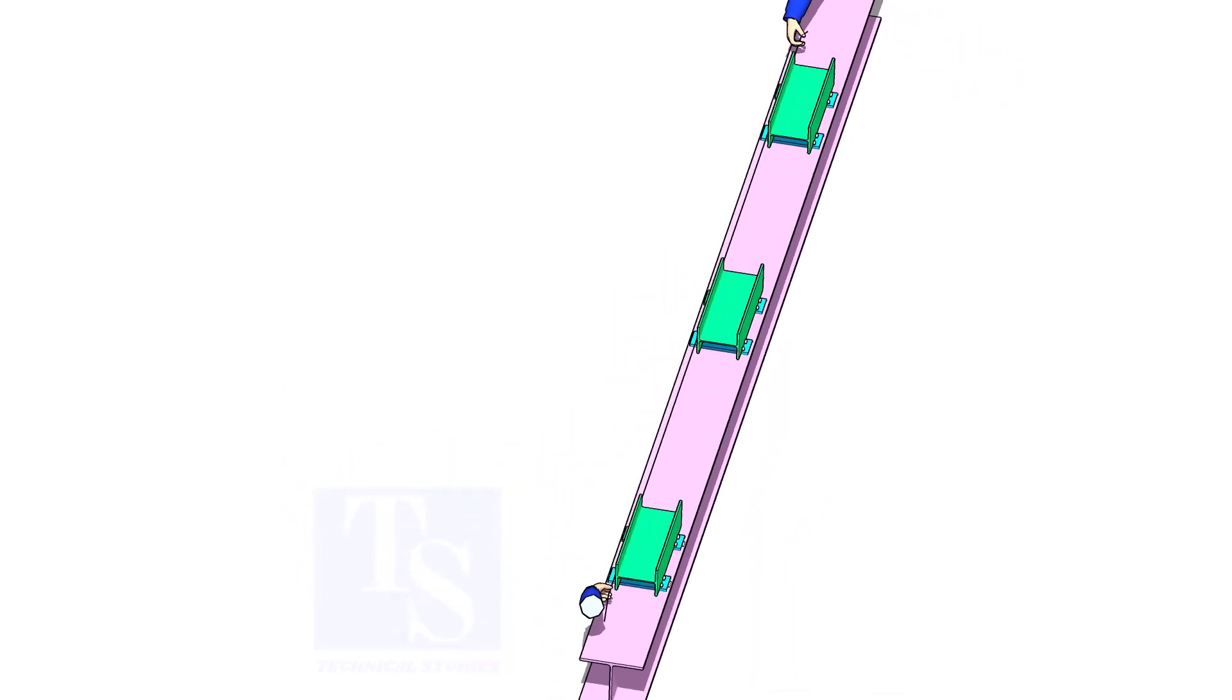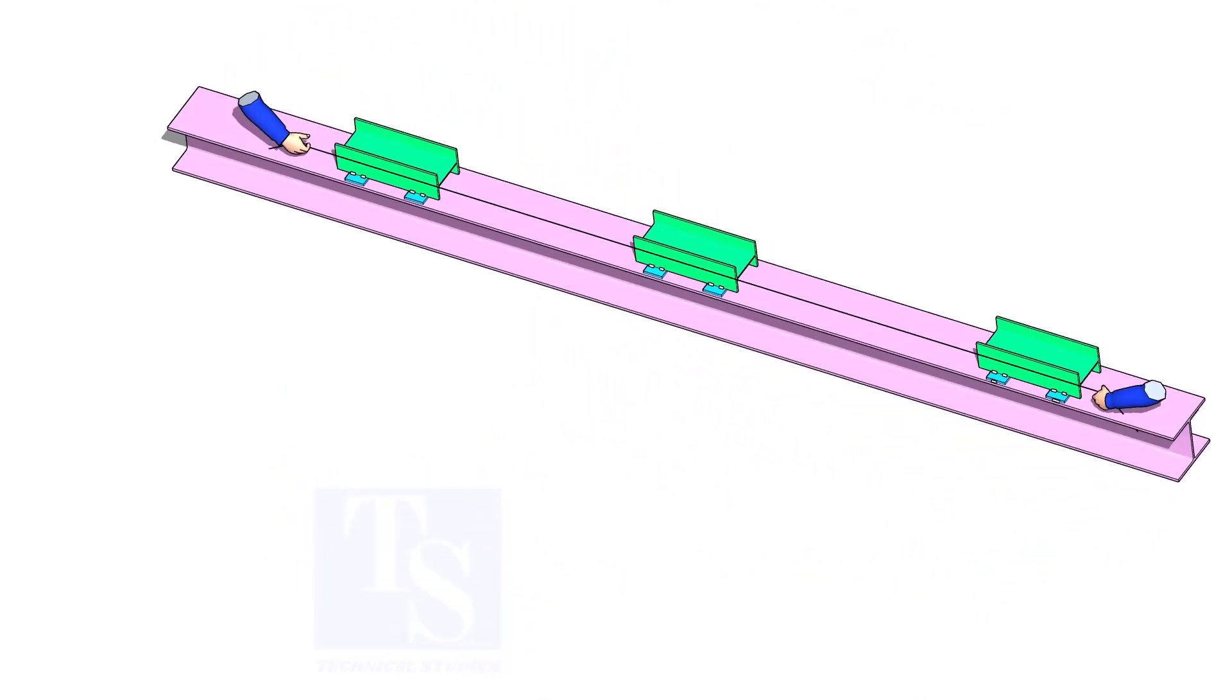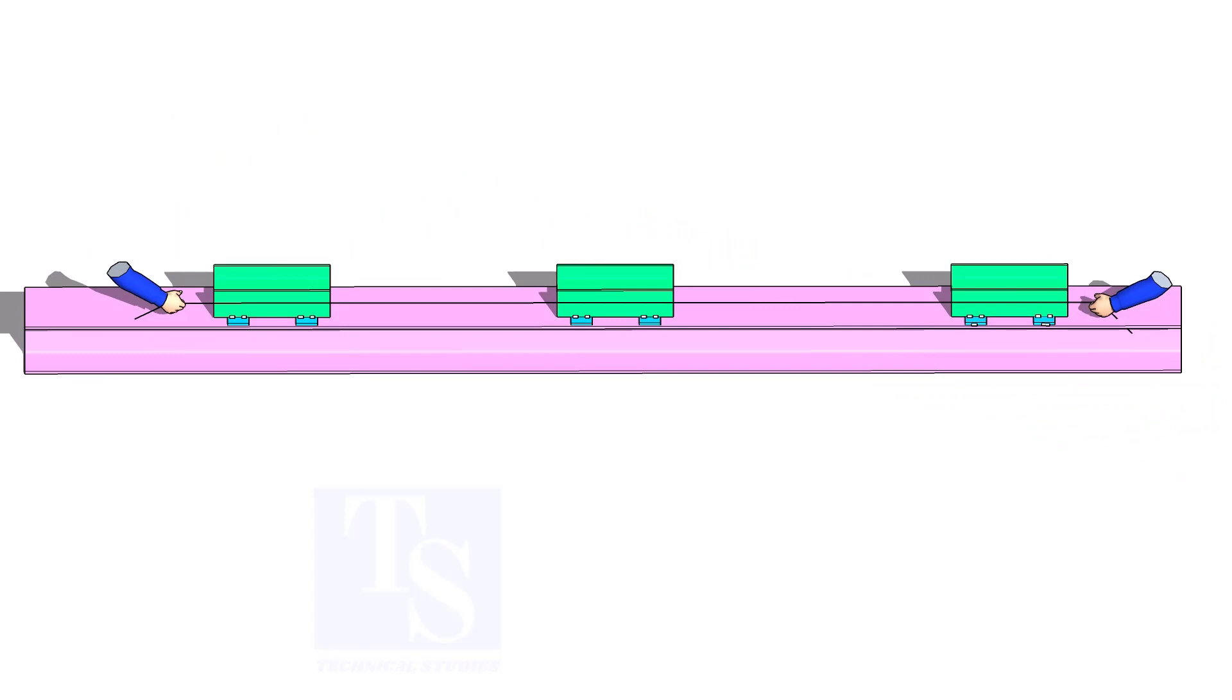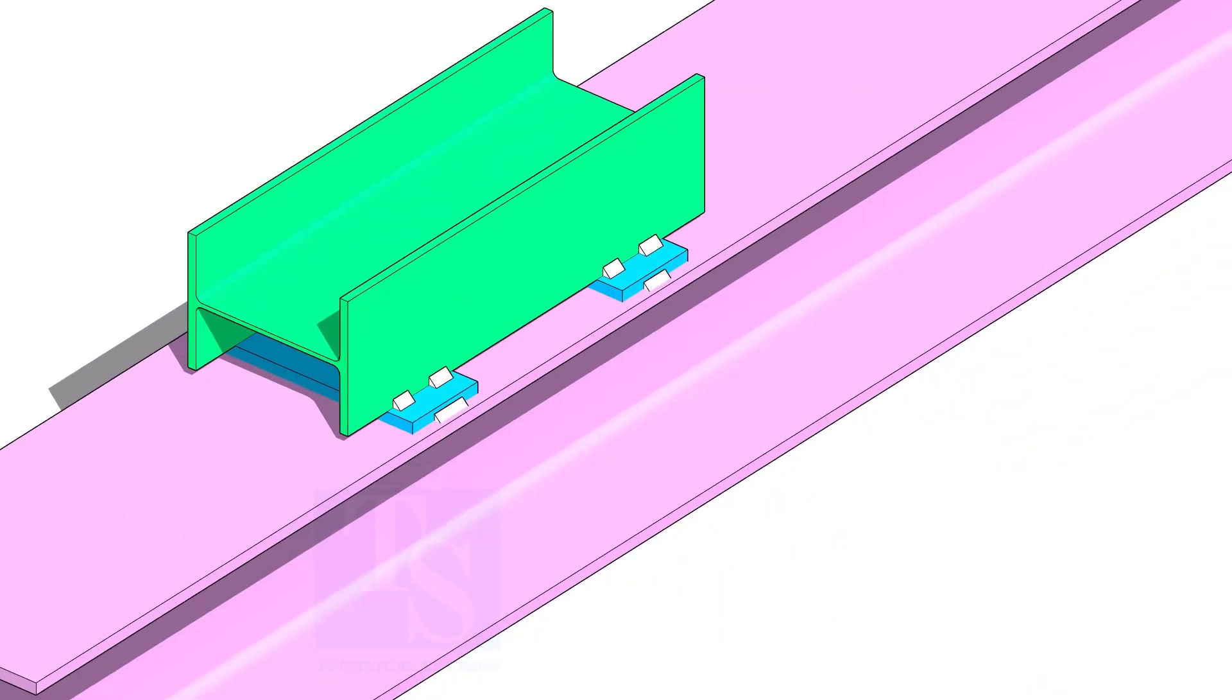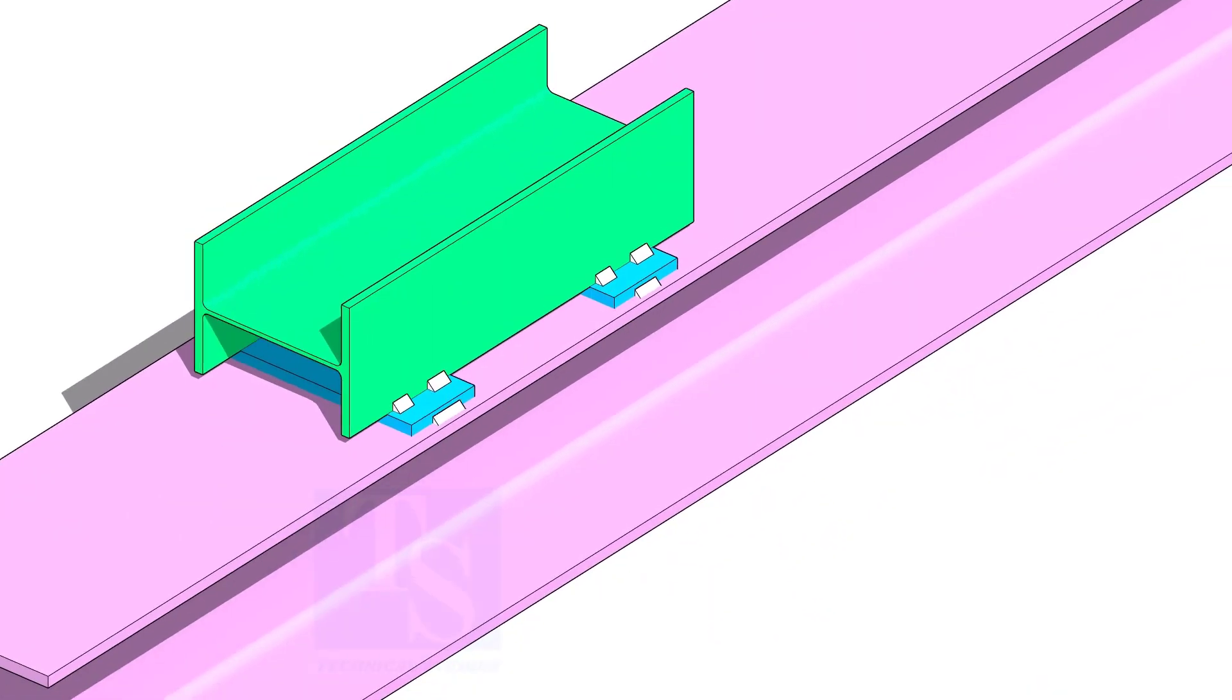Put three pieces of jigs on a straight platform. I prefer a straight beam because it is easily available in a construction site. Make sure the jigs are in line. Tack weld the jigs on the beam.